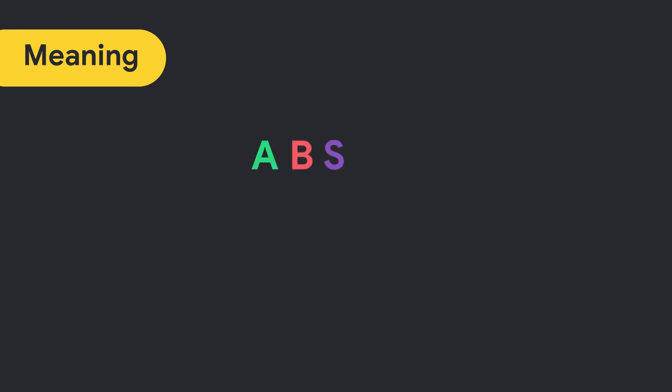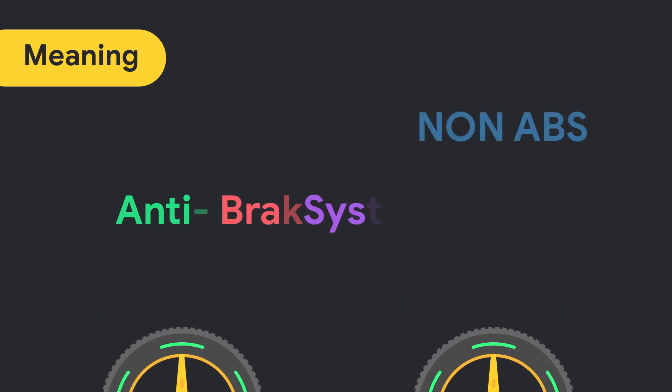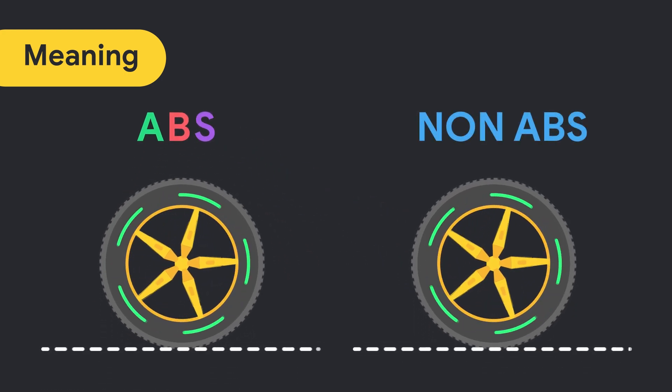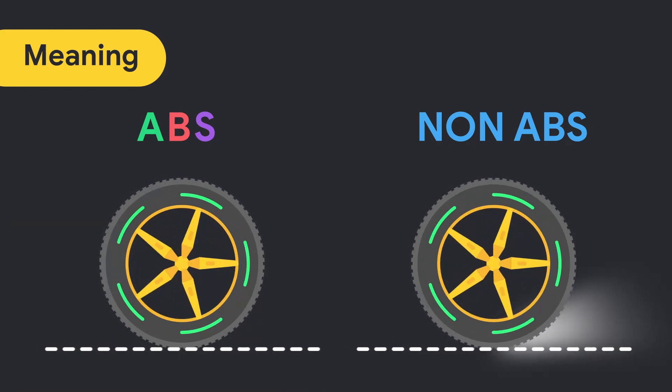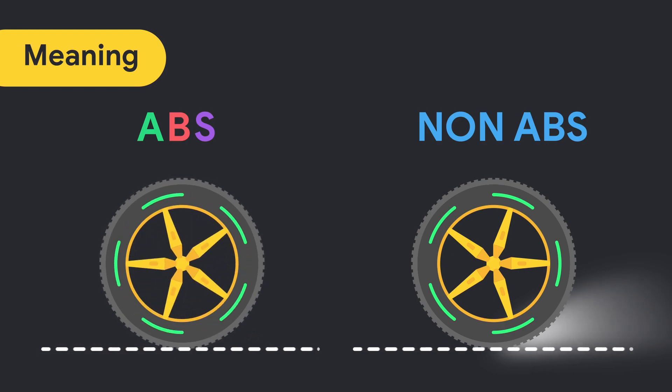ABS stands for anti-lock braking system and the main function of ABS system is to prevent the wheels of vehicle from road skid while braking. This is achieved by eliminating the locking of wheels while braking. So, it's called anti-lock braking system.